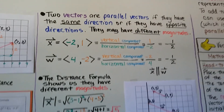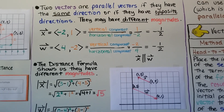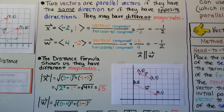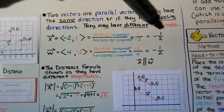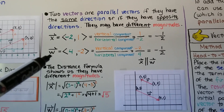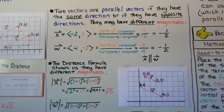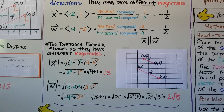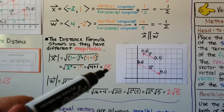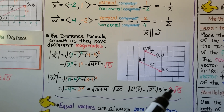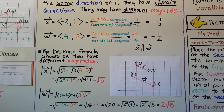Two vectors are parallel vectors if they have the same direction or if they have opposite directions. They may have different magnitudes. Here we have vector x and vector w. In component form, vector x is 〈-2, 1〉 — the vertical over horizontal component is -1/2. The component form of vector w has vertical over horizontal equal to -2/4, which is also -1/2. Vector x is parallel to vector w. The distance formula shows they have different magnitudes: the magnitude of vector x is √5, and the magnitude of vector w is 2√5.